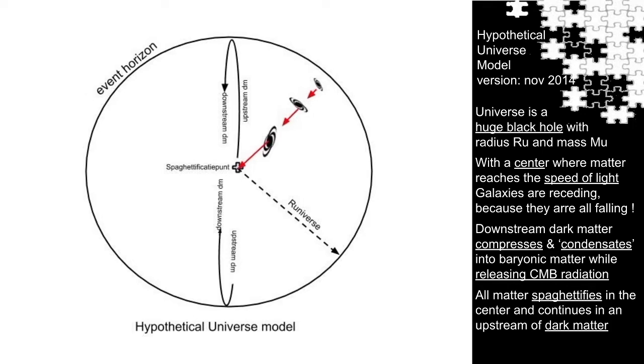But in what does matter spaghettify? And the only logical explanation in this model, normal matter spaghettifies into dark matter again. So the universe recycles matter. It makes matter, it produces radiation and in the end it breaks down matter into dark matter again. A perfect recycling process.